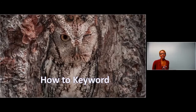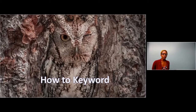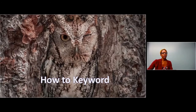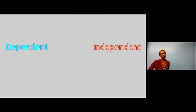Now, on to how to keyword. These are the keywords you're going to be searching when you get to the databases, and it's a really great idea to come up with these beforehand so that when you get there, you have a number of things you can start searching — especially if you get stuck. How to keyword is to pick apart your topic sentence. A really great way to do that is to think about your dependent variable and your independent variable, which you may have already covered in your psychology class.